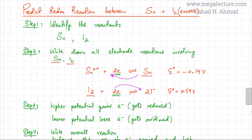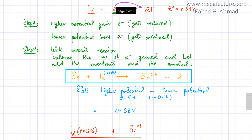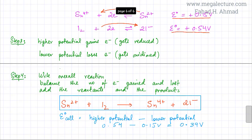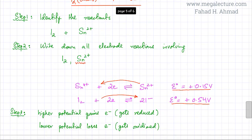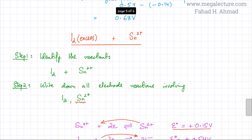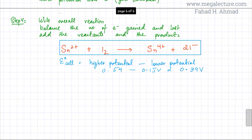Looking back at the question from the beginning, we first had Sn reacting with excess I₂ to produce Sn²⁺ and 2I⁻. After the products were formed, the excess iodine then reacted with the product Sn²⁺ in a second reaction, producing Sn⁴⁺. So there were two steps: first Sn → Sn²⁺, and then Sn²⁺ → Sn⁴⁺. I'm going to add the two reactions together to find an overall reaction.